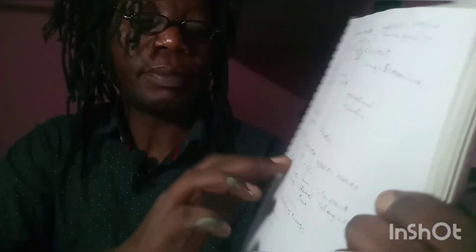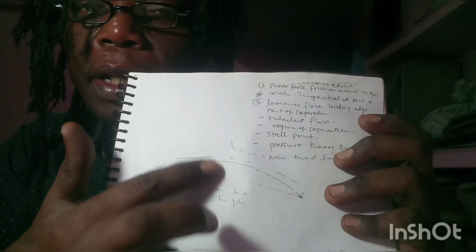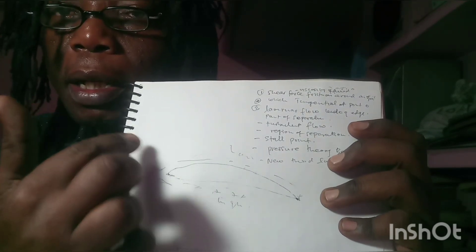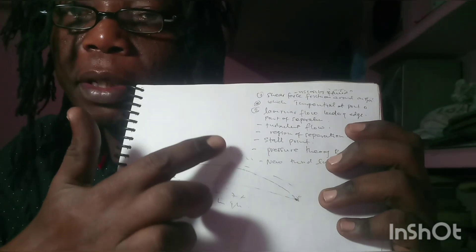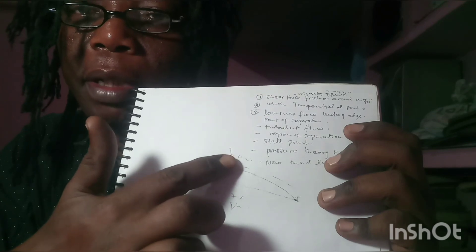According to Bernoulli's equation written here, we have static pressure P, then dynamic pressure — that's density times velocity squared over 2 — plus density times gravity times height. This represents the pressure energy when the airstream hits the airfoil. We have static, dynamic, and hydrostatic pressure. As the air moves up over the airfoil, there is atmospheric pressure pressing down on it, so the air sticks to the boundary layer.